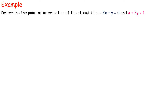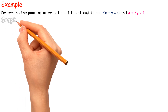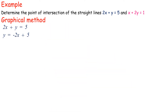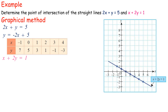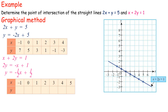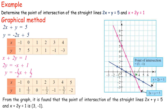Example: Determine the point of intersection of the straight lines 2x plus y equals 5 and x plus 2y equals 1. Graphical method: Rearranging gives y equals negative 2x plus 5 and y equals negative half x plus half. From the graph, the point of intersection of the straight lines is (3, negative 1).